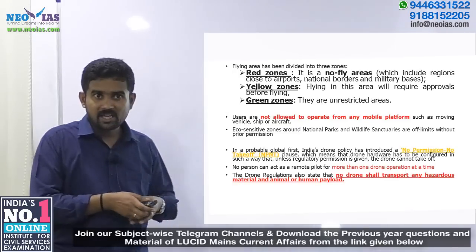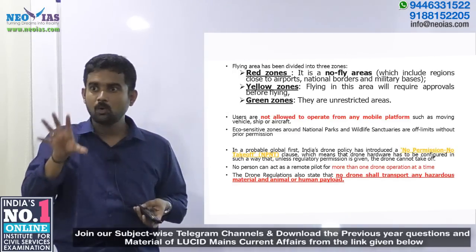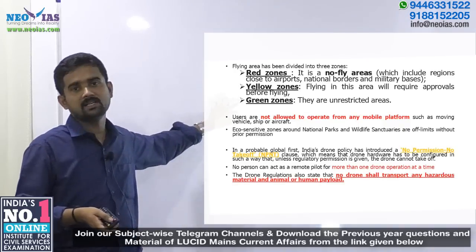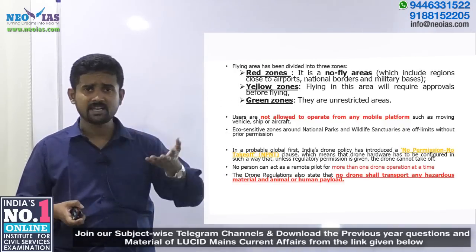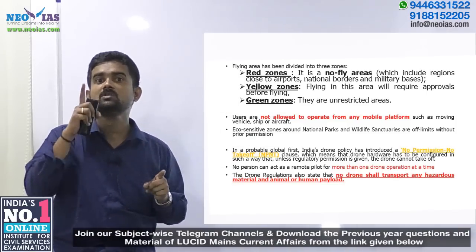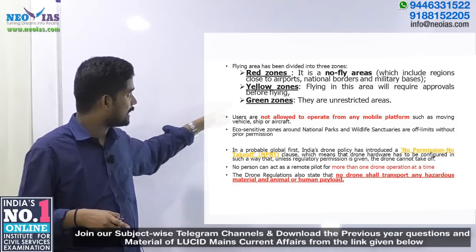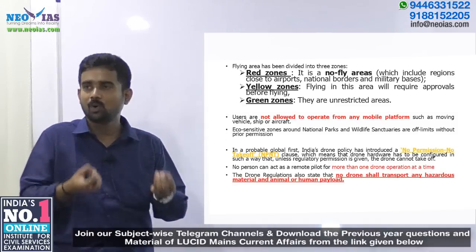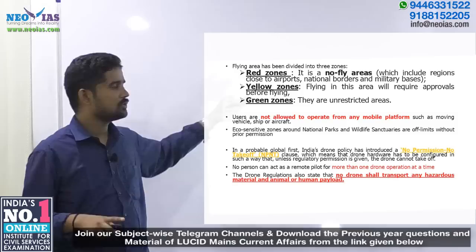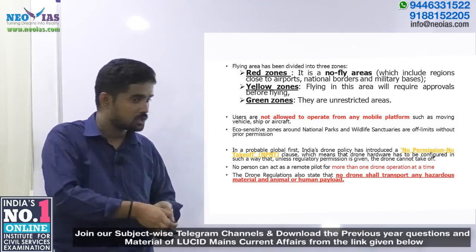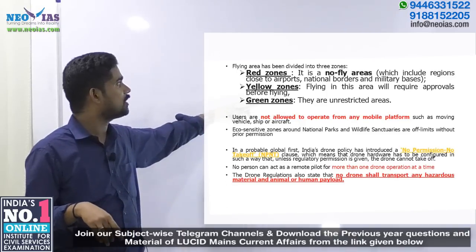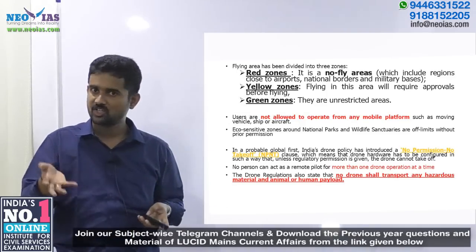The flying areas for drones are divided into red zones, yellow zones, and green zones. Red zones are no-fly areas, which include regions close to airports, military bases, and borders. Yellow zones allow flying provided you get proper approval. Green zones are unrestricted areas where you can fly freely.